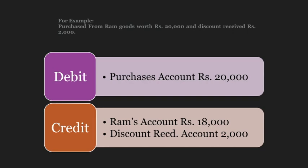Another example: Ram purchased goods worth 20,000 and received a discount of 2,000. The credit side would be 20,000 (Ram's account). On the debit side, purchases would be 18,000 and discount received would be 2,000 — totaling 20,000. So every debit has an equal credit.